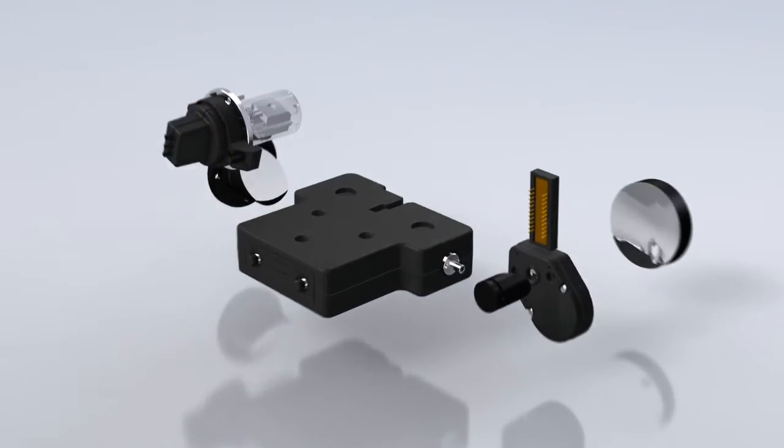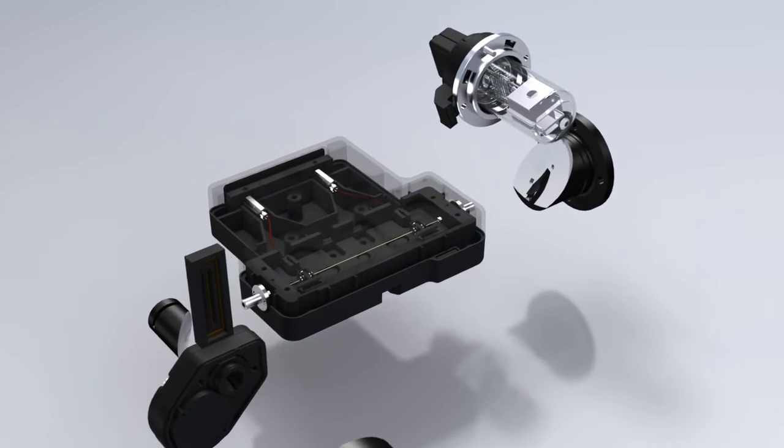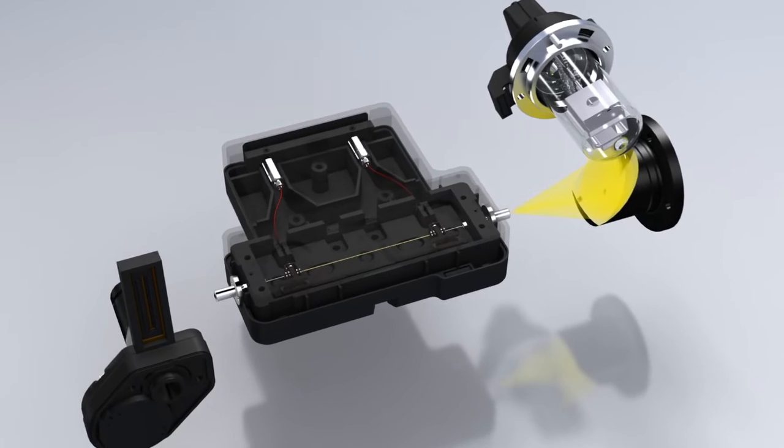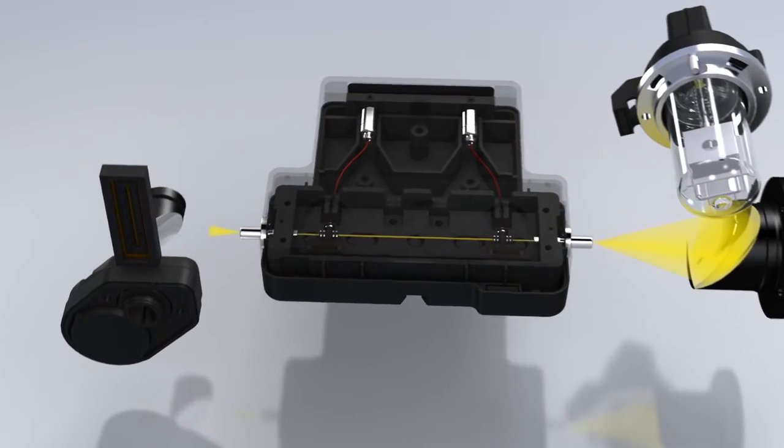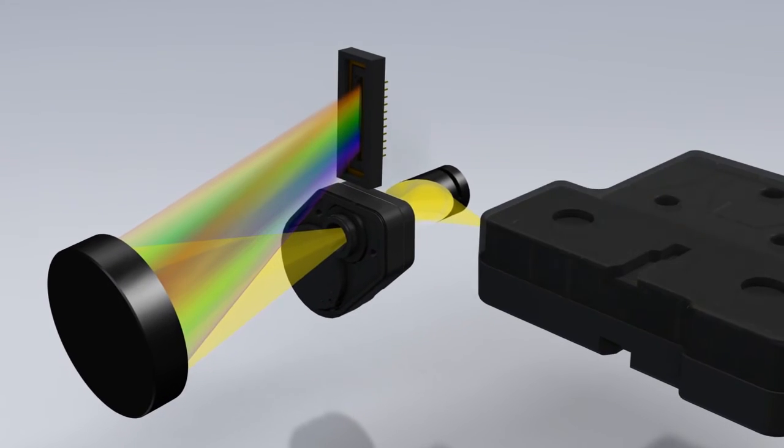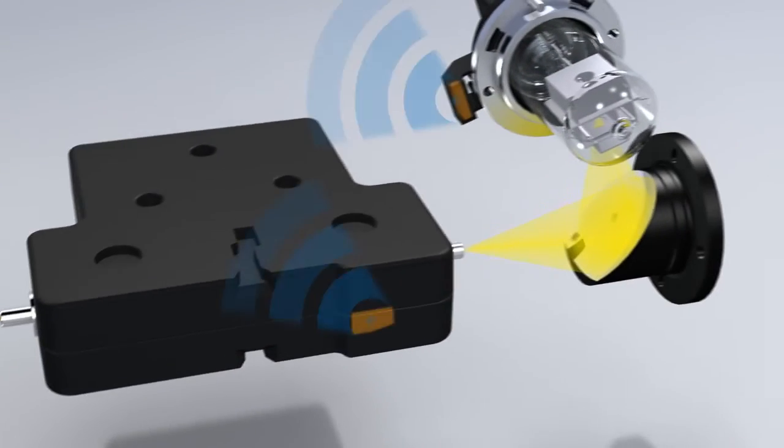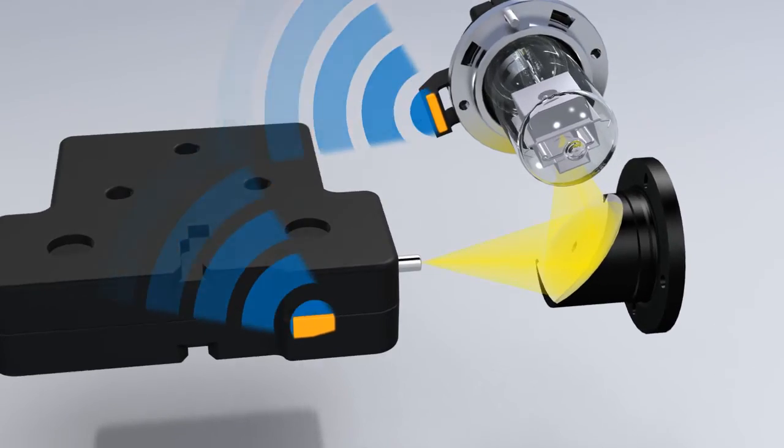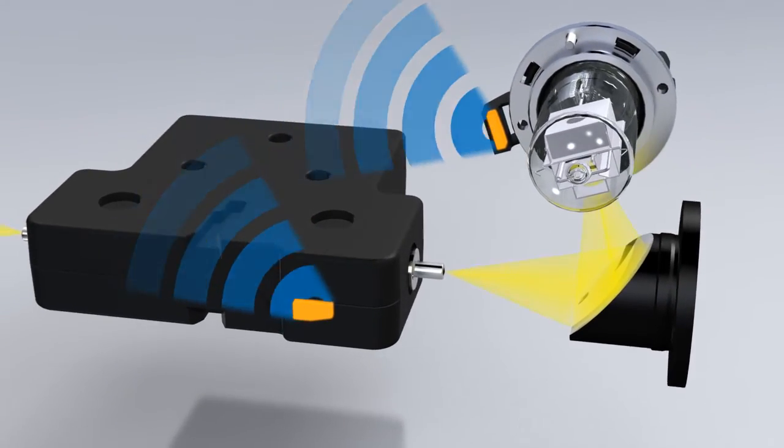In the 1260 and 1290 Infinity DADs, the light from the deuterium lamp passes through the MaxLite flow cell and is then dispersed on the diffraction grating before falling on the photodiode array. Each lamp and flow cell has a radio frequency ID tag for full traceability and compliance.